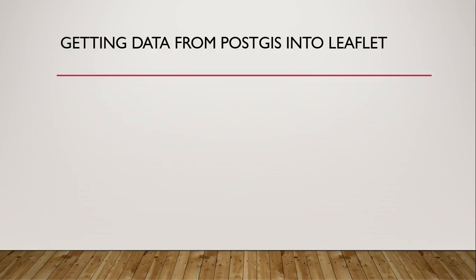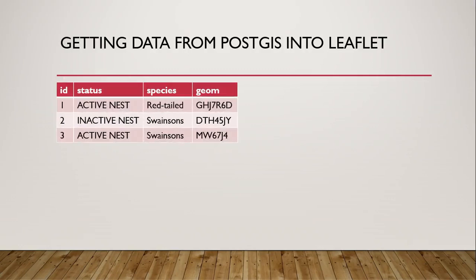To clarify this, consider a table in PostGIS with three attribute fields named id, status, and species, and also a column named geom that contains the spatial data in binary format that isn't human-readable. We need to get this data from the PostGIS table into GeoJSON format so Leaflet can understand and display it on our web map. All GeoJSON objects have a type property. The main GeoJSON object we'll read into Leaflet has a type of feature collection, which means it also has a features property containing an array of features — the feature collection corresponds to an entire table.